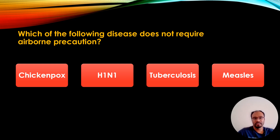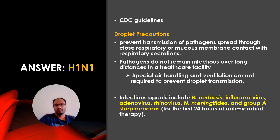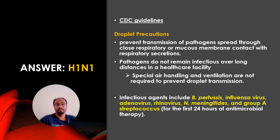The next question: Which of the following diseases does NOT require airborne precaution? Options: chickenpox, H1N1, tuberculosis, or measles. The correct answer is H1N1. Droplet precautions prevent the transmission of pathogens spread through close respiratory or mucous membrane contact with respiratory secretions. These pathogens do not remain infectious over long distances, so no special air handling is needed. Infectious agents include Bordetella pertussis, influenza virus, adenovirus, rhinovirus, Neisseria meningitidis, and group B Streptococcus for the first 24 hours of antimicrobial therapy.